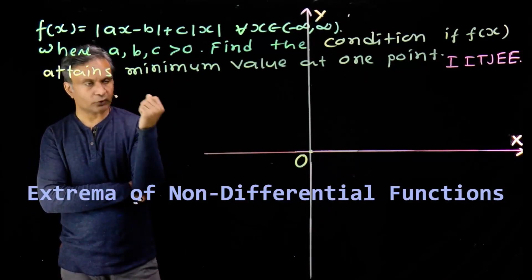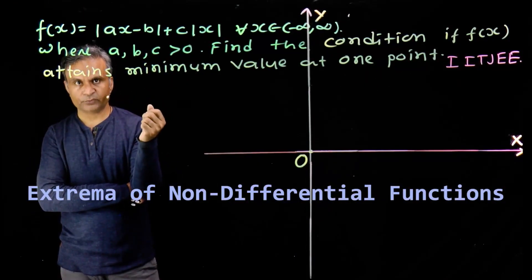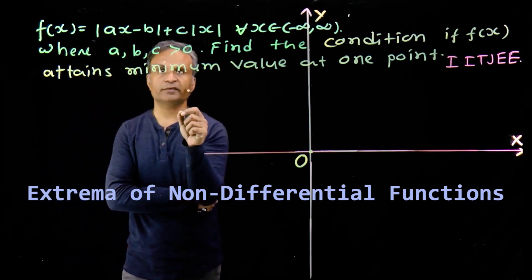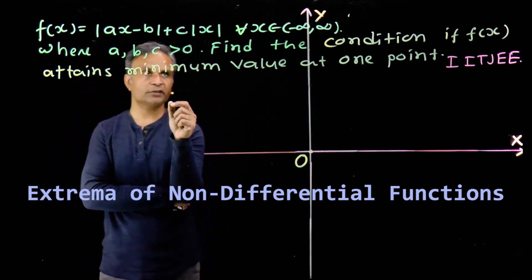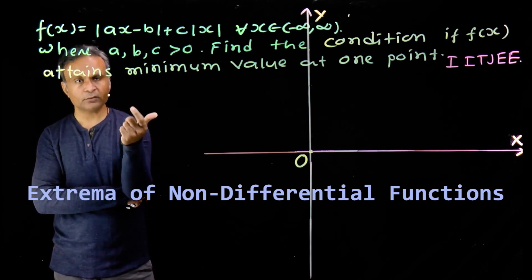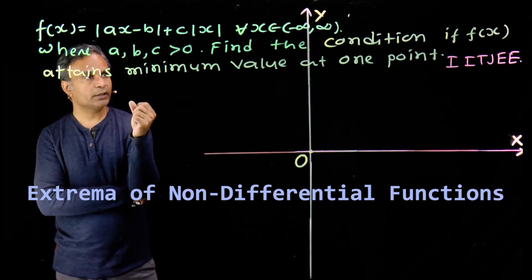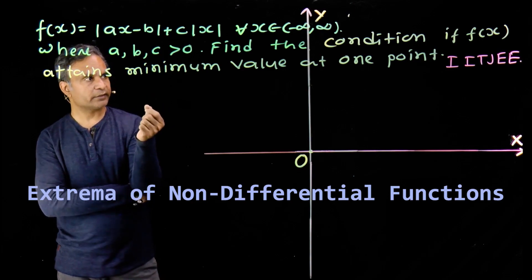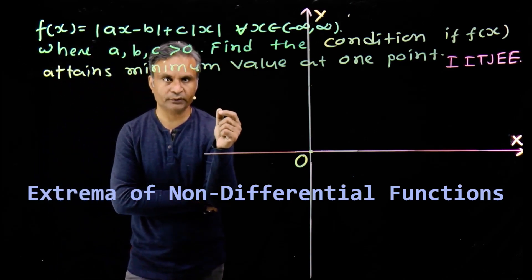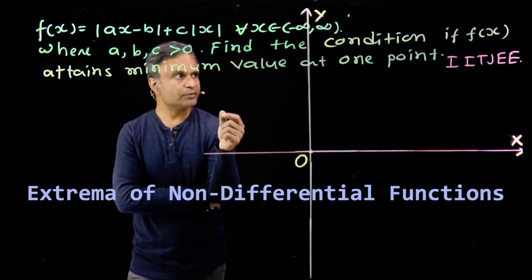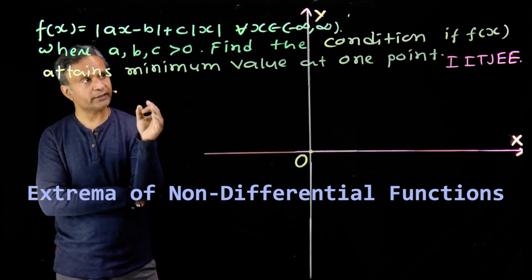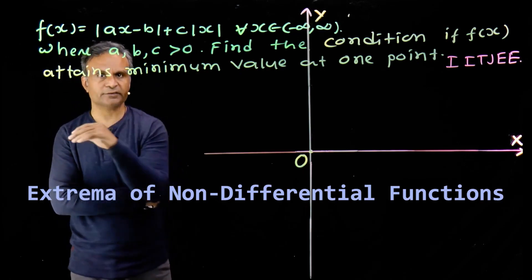We have this question from a G exam. The function f(x) is modulus of (ax minus b) plus c into modulus of x, for all x belonging to R, where a, b, and c are positive real numbers. We have to find the condition if f(x) attains its minimum value at exactly one point.